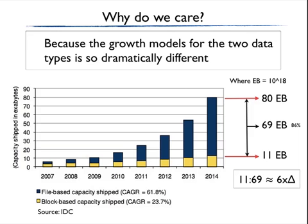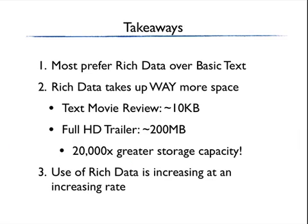Jumping back to the earlier slide, one question that came to mind is: does this 6x multiple of unstructured data versus structured data feel right? At first glance it felt like too big a jump, so I was a bit suspicious. But when we dive in and look at an example like that movie trailer with a 20,000x difference, it at least gives us a quick sense of how an analyst might arrive at that 6x spread when looking at everything in aggregate. We can at least rationalize the case for exponential growth in certain sectors, even if it's hard to extrapolate gross trends from there.